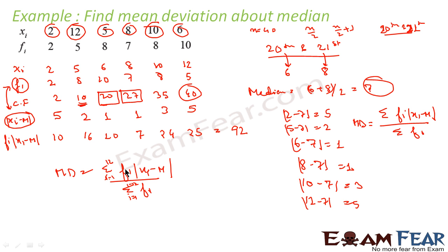Here also i is equal to 1 to 12. This is all i. This becomes 92, we found this value 92 divided by sigma fi, we know is nothing but 40. If you add this becomes 40.